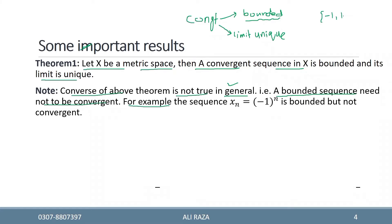اس sequence کا range set {-1, 1} ہے۔ اس set کا diameter نکالیں: maximum distance یعنی 1 - (-1) = 2، جو finite ہے، اس لیے یہ bounded set ہے۔ اس کا supremum 1 اور infimum -1 ہے، یعنی upper bound اور lower bound دونوں exist کرتے ہیں۔ دونوں طریقوں سے یہ sequence bounded ثابت ہوتی ہے۔